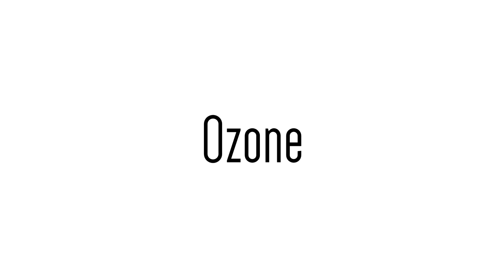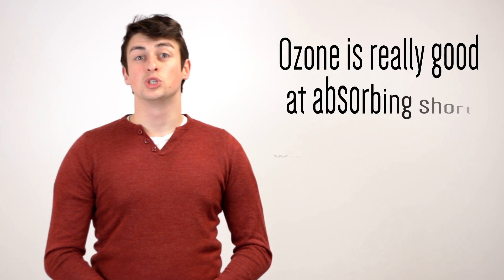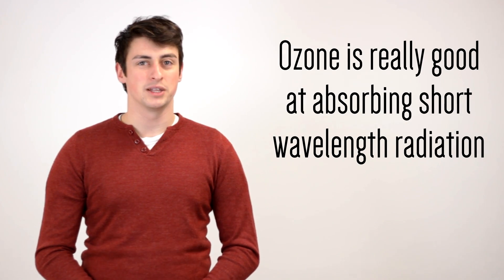Ozone is a molecule formed of three oxygen atoms. And it's found in huge abundance in the middle stratosphere, though it's by no means the dominant gas in those areas. And the fact that it's formed of three atoms instead of the two of nitrogen and oxygen means that it has different absorption properties. And in particular, it means that it's not so great at absorbing the long wavelength radiation of the Earth emits, but it's really good at absorbing the short wavelength radiation that the Sun emits.